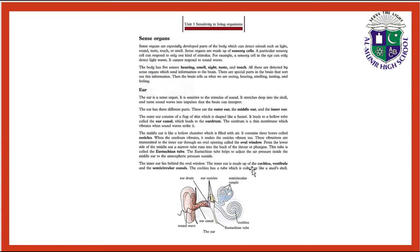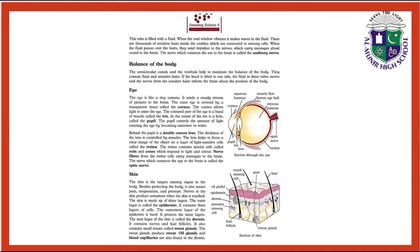The inner ear lies behind the oval window and is made up of the cochlea, vestibule, and semi-circular canals. The cochlea has a tube which is coiled like a snail's shell. This tube is filled with fluid. When the oval window vibrates, it makes waves in the fluid.